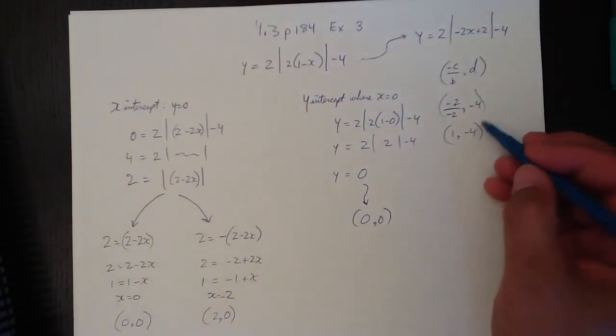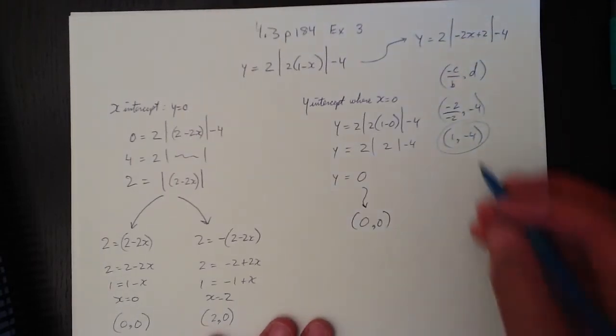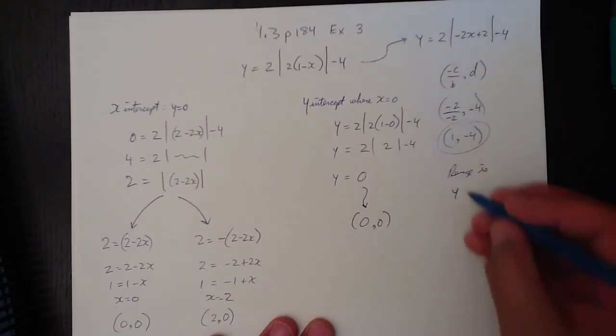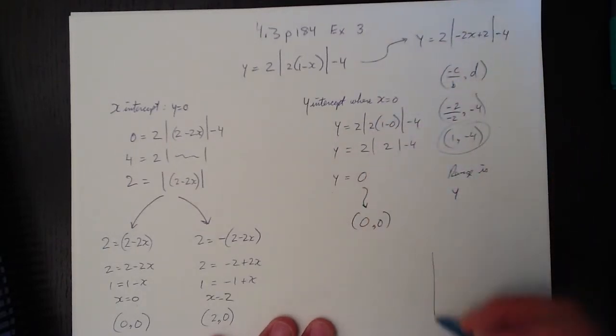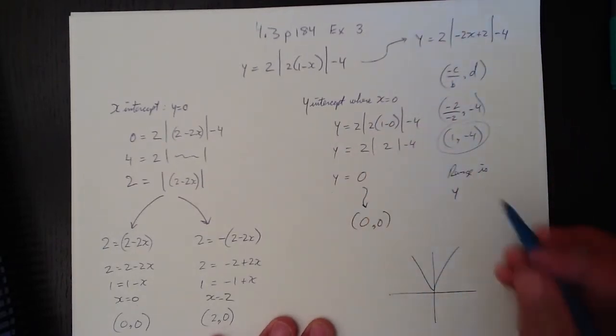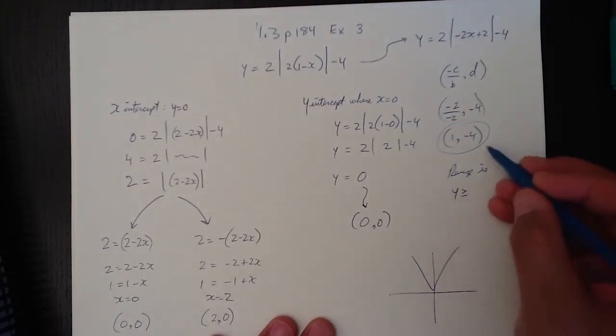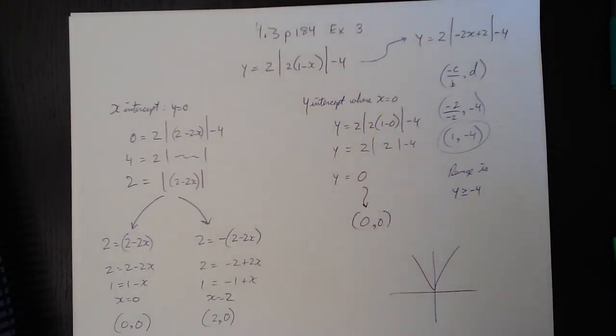And that's our vertex. And if that's our vertex, our range is y, remember we open up, it's going to be one of these. And if that's the case, y is greater than or equal to negative 4, and that'll be our range.